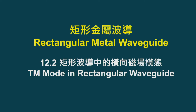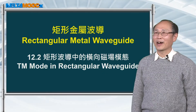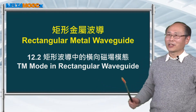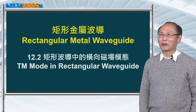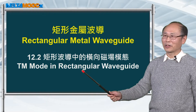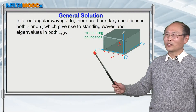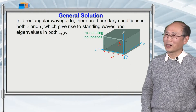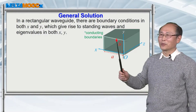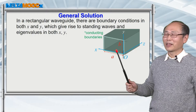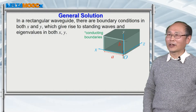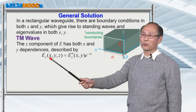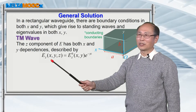In the last session, we talked about parallel plate waveguide, which has open boundary along x-direction. In this session, I'm going to add one more set of boundary along x-direction and make it into a rectangular waveguide. With this additional boundary, you'll be expecting a standing wave along x-direction as well, and the field is going to vary along both x and y-direction. The propagation direction of the wave is along z-direction. So let's first write down the field expression for the TM wave along the axial direction, which is the z-direction.